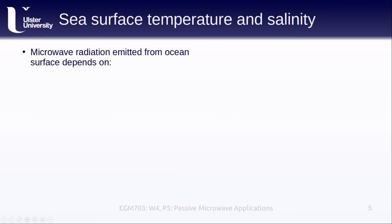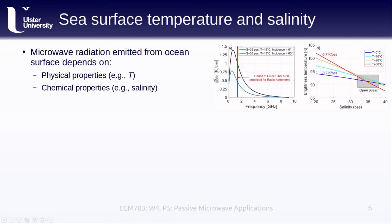Like for other surfaces, the radiation emitted by the ocean surface is dependent on the physical properties of the ocean, such as temperature, as well as the chemical properties, such as salinity. From the graph on the left, we can see how the derivative of the measured brightness temperature varies with respect to the sea surface salinity, or SSS. This varies as both a function of frequency and a function of viewing angle. The vertical red line highlights the 1.4 to 1.47 gigahertz band, which is protected for radio astronomy — at these frequencies we don't have to worry as much about interference from other transmitters, making this a popular band to observe passive microwaves in.